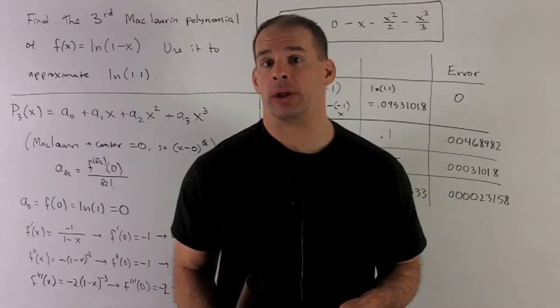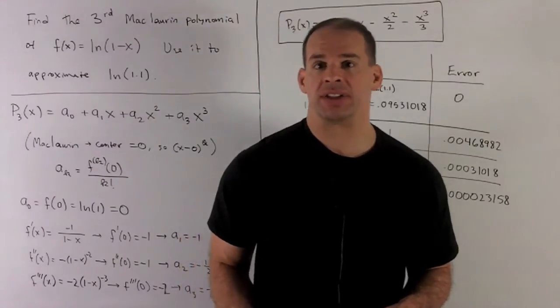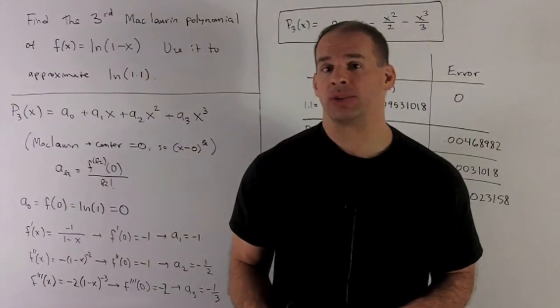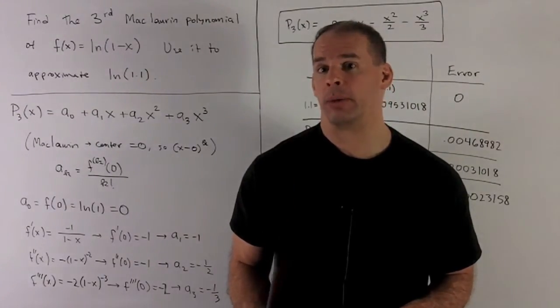Find the third Maclaurin polynomial for the function f(x) = ln(1-x) and use that to approximate ln(1.1).